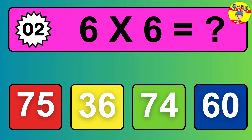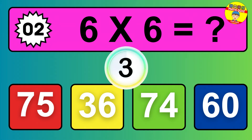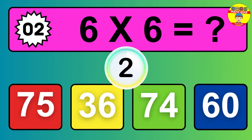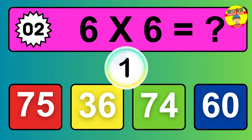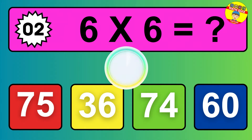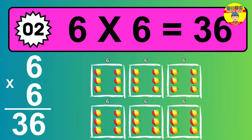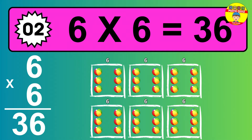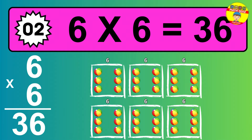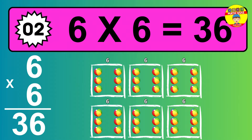Question two. Six times six equals what? The answer is six times six is 36. To calculate, we have six groups with six balls each one. So how many balls do we have? 36 balls.